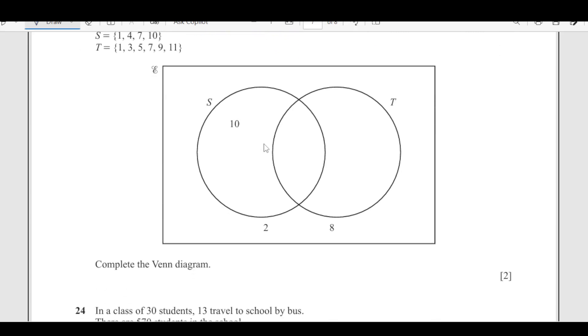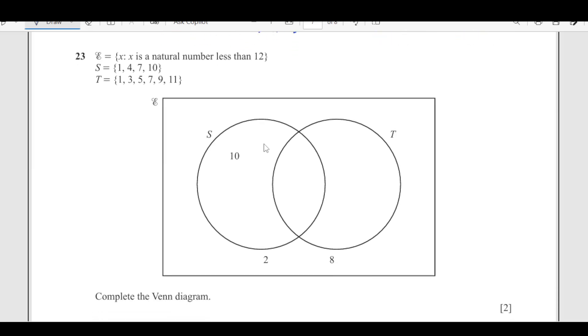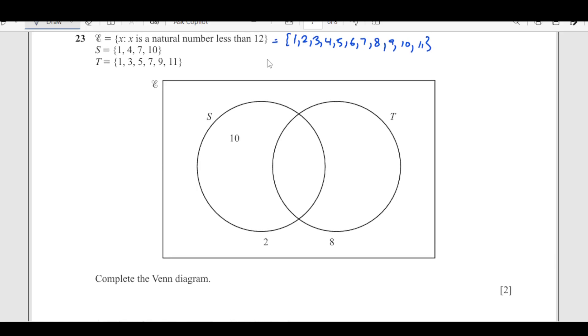Number 23: x is a natural number less than 12, so x = {1, 2, 3, 4, 5, 6, 7, 8, 9, 10, 11}. S is {1, 4, 7} and T is {1, 3, 5, 7, 9, 11}. Complete the Venn diagram. We'll put all these values wherever required. S is 1, 4, 7. 10 is already there in the diagram.